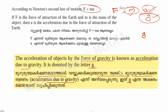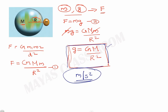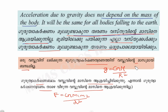So, what is the acceleration due to gravity? It is represented by small g. Small g is equal to capital G times capital M divided by R squared. This value does not depend on the mass of the falling object. The value of g is 9.8 meters per second squared.